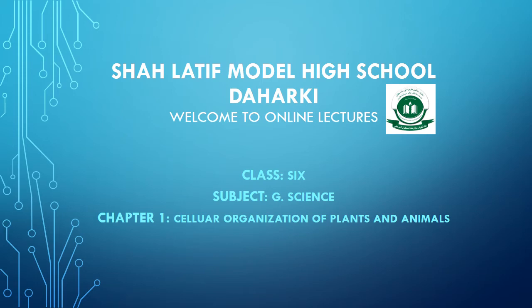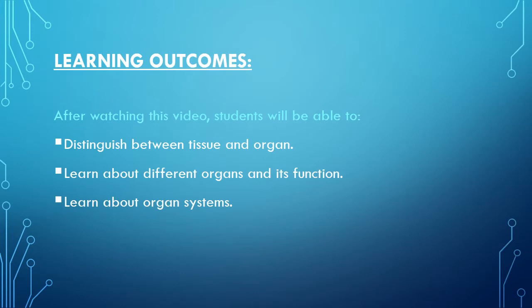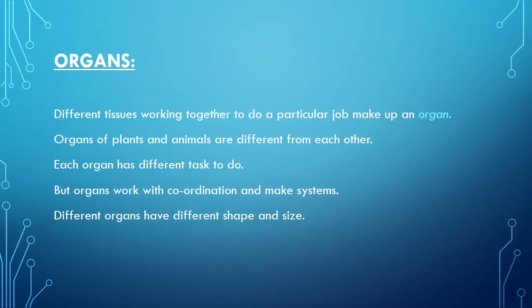Welcome to online lecture by Shalateef Model High School Daherki. Today we discuss the last topic of chapter number one: cellular organization of plants and animals. After watching this video you will be able to distinguish between tissue and organ, learn about different organs and their functions, and learn about organ systems.